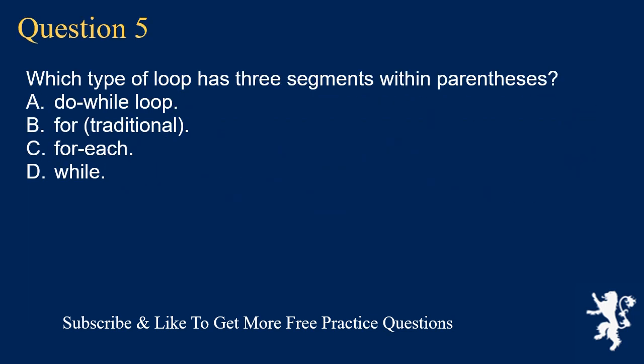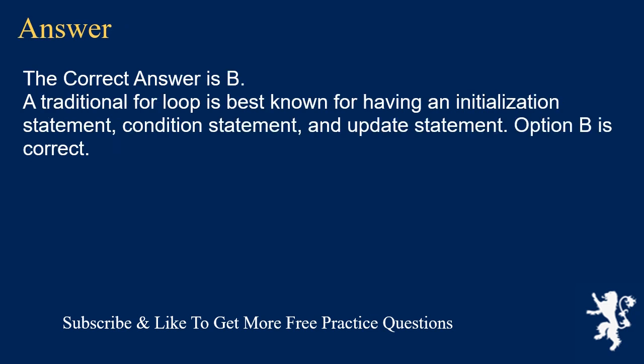Question 5. Which type of loop has three segments within parentheses? A. Do-while loop. B. For traditional. C. For each. D. While. The correct answer is B. A traditional for loop is best known for having an initialization statement, condition statement, and update statement. Option B is correct.